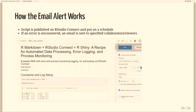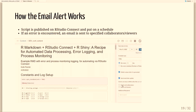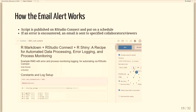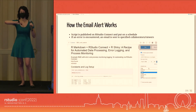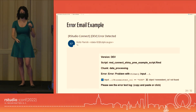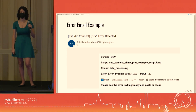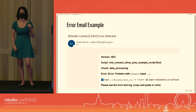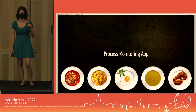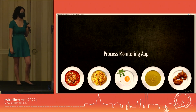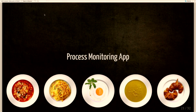Putting this all together: the script is published on R Studio Connect, running on a schedule. Logging is integrated into the script, as is the error logic. In the event of an error, Connect uses Blastula to send an email to specified viewers and collaborators. That error email follows the template shown — version, script name, chunk name, the error itself, and the log path. Andy will now cover how we took those JSON-format log files and turned them into something more digestible.